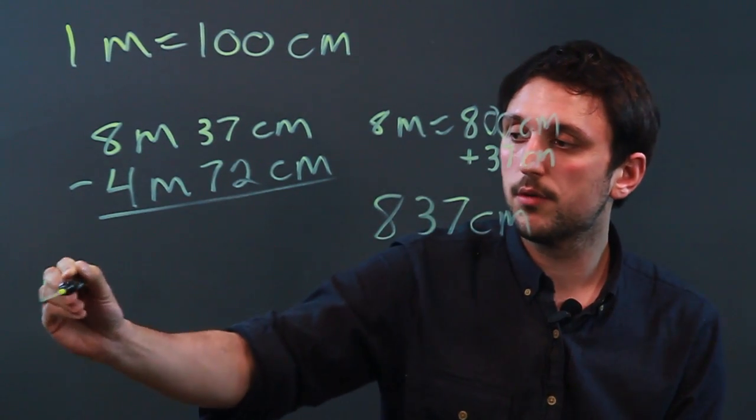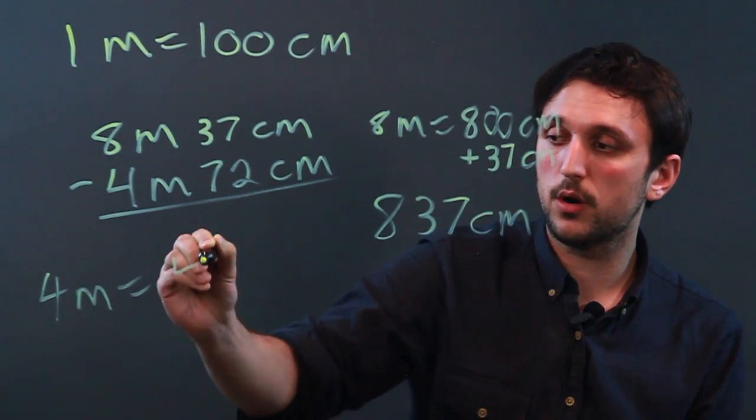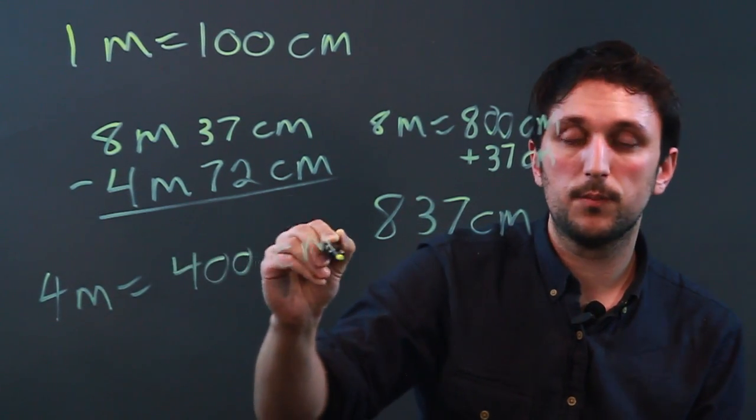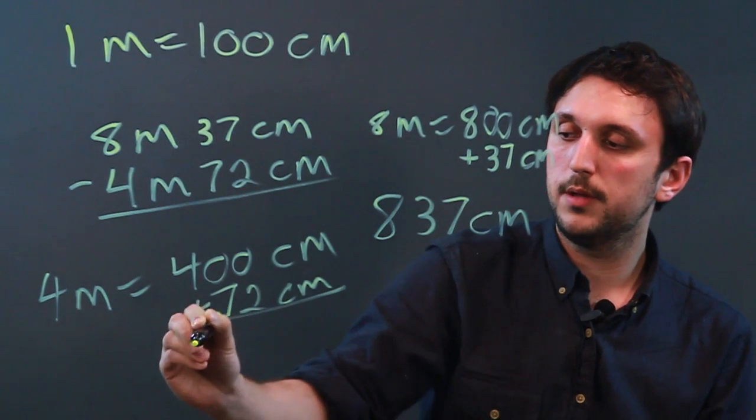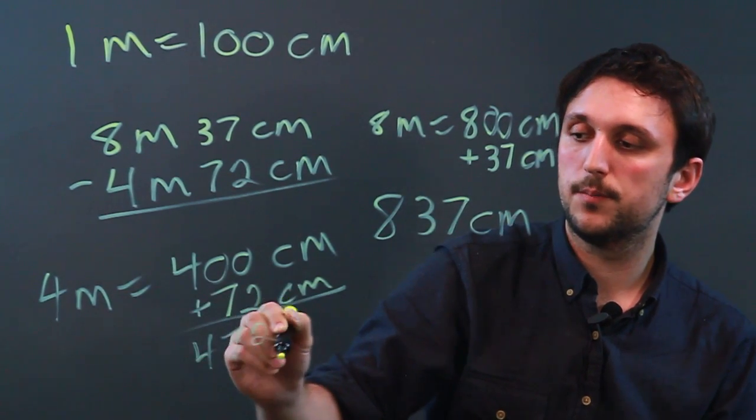Now over here we have four meters which equals 400 centimeters plus 72 centimeters would be 472 centimeters.